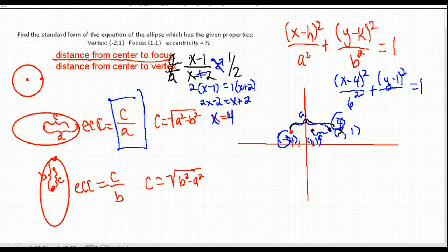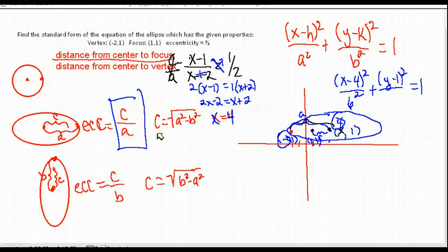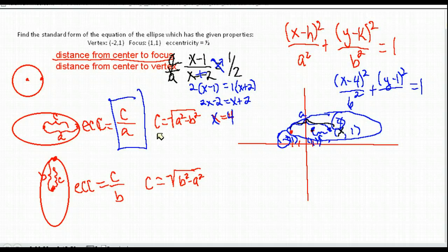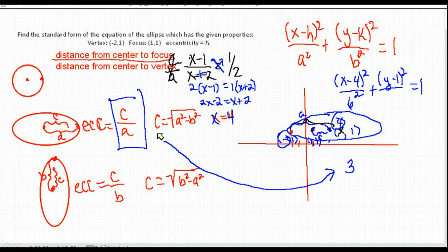We don't know B yet, but we can find it. For a horizontal ellipse, C = √(A² − B²). C is the distance from center (4,1) to focus (1,1), which is 3. So: 3 = √(6² − B²), and 6 squared is 36.